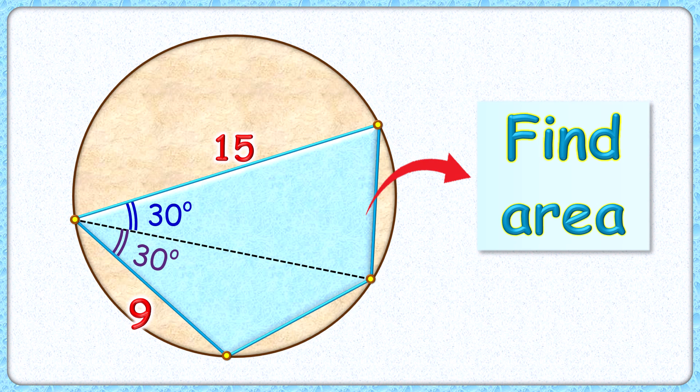Welcome everyone. This interesting question involves a cyclic quadrilateral with side lengths 15 and 9 cm, and this dotted line is the angular bisector of this angle.